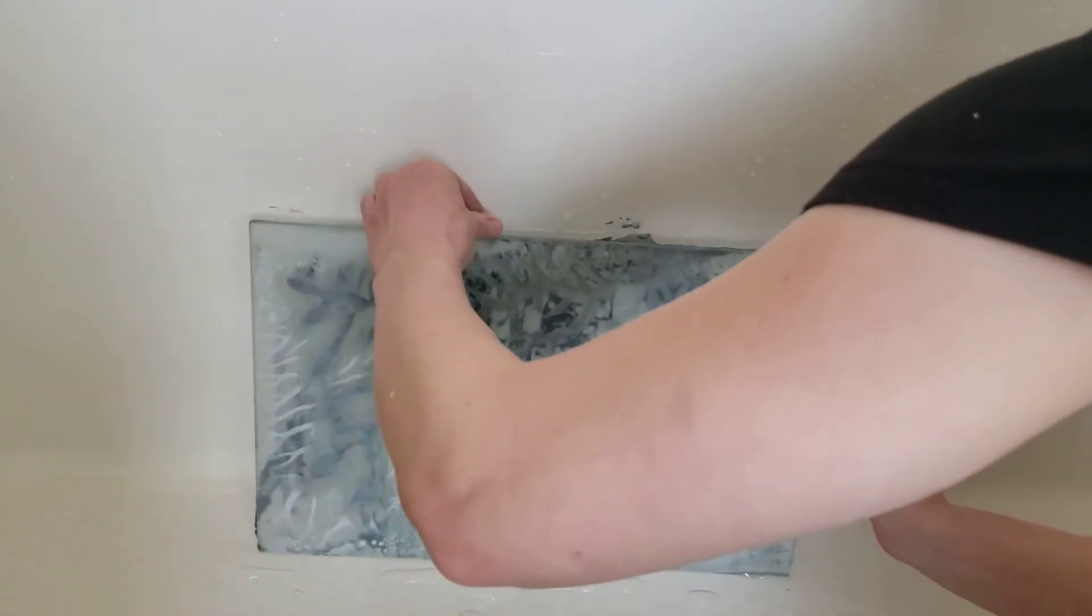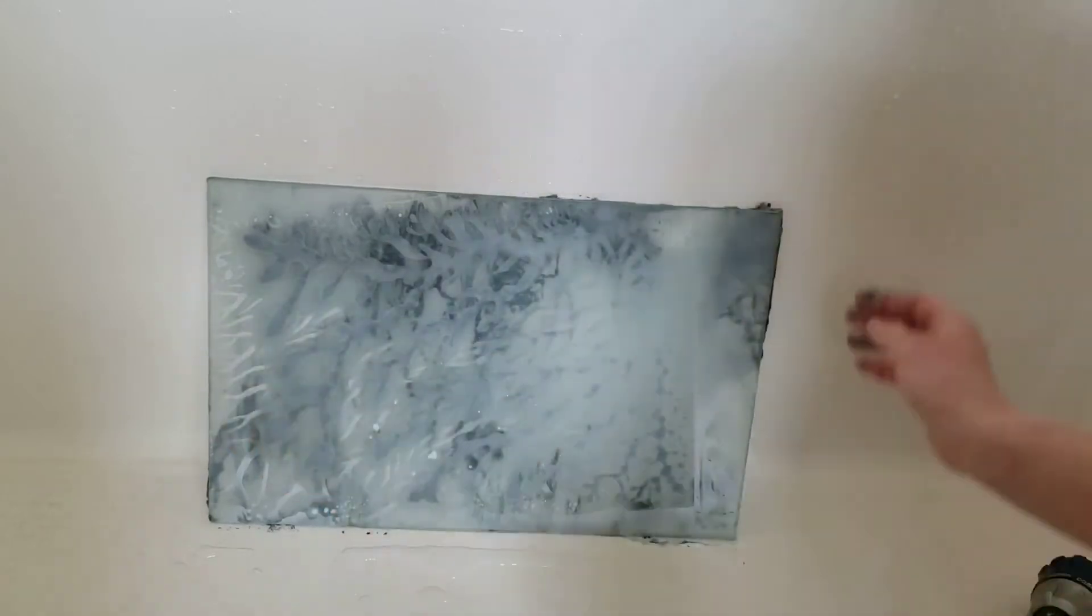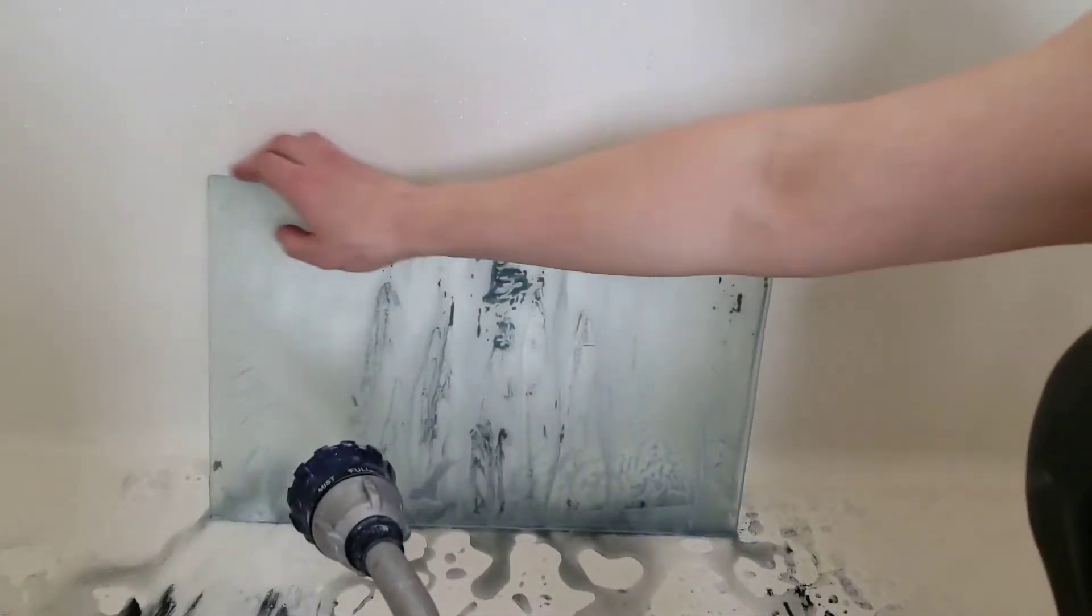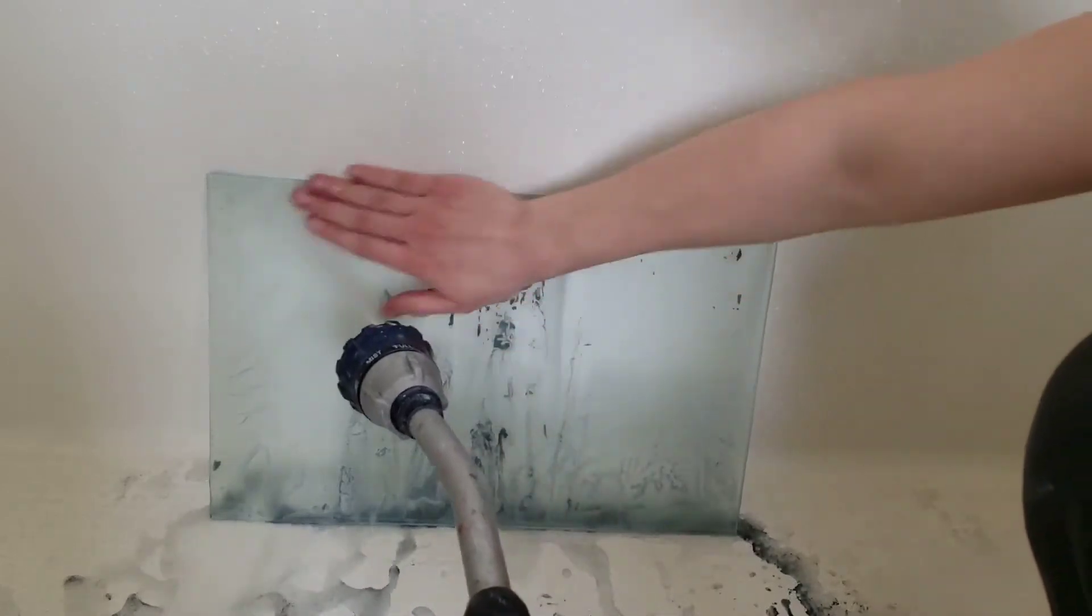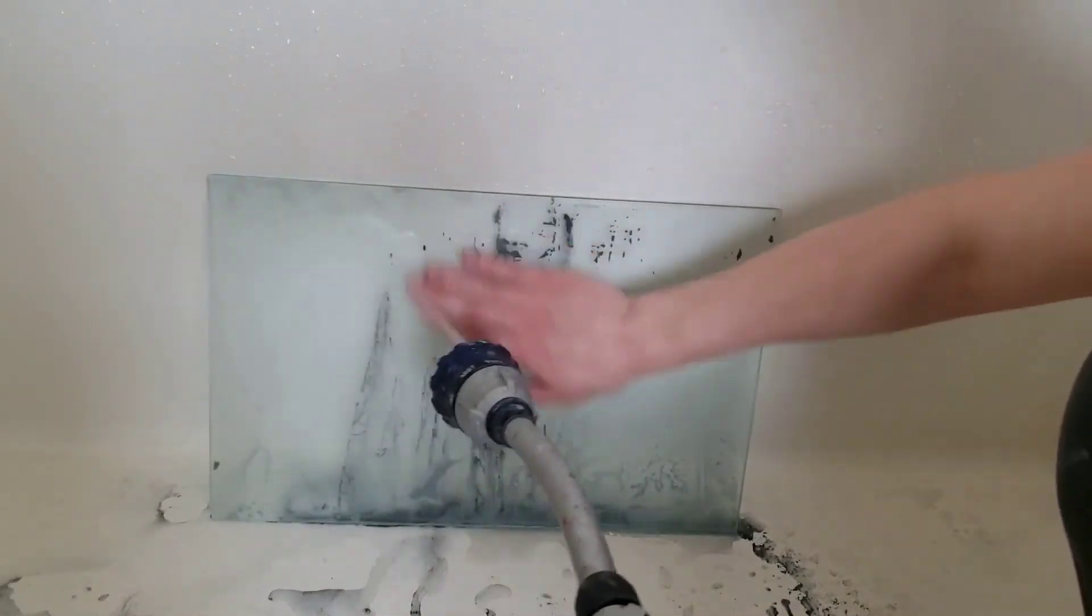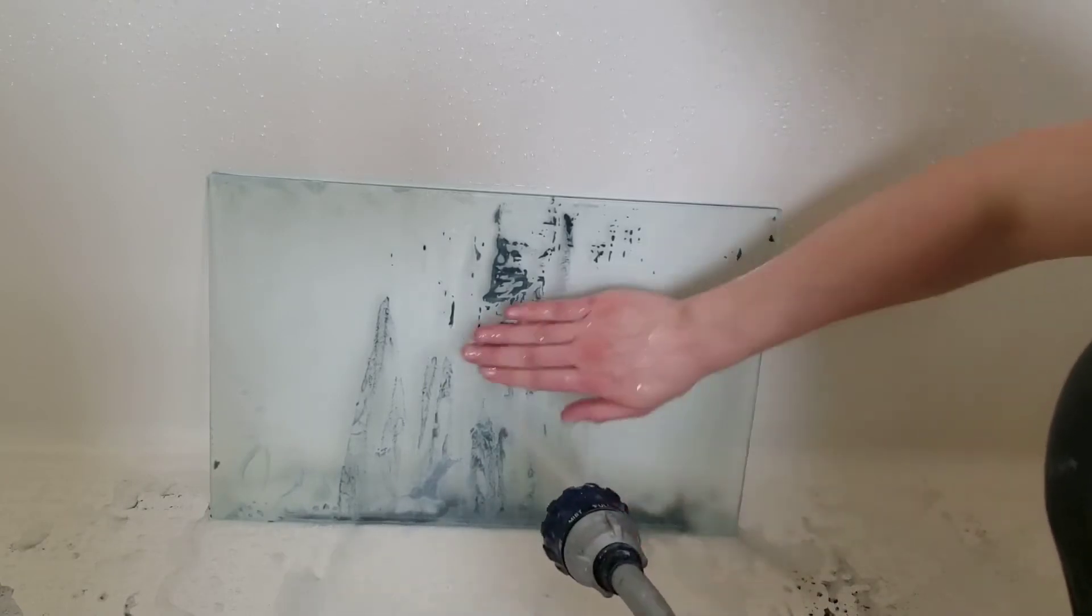Set the plate upright and wash with water. Wipe the edges with your hands because the grit will build up there. Use small circles with your hands to wash the carborundum off the surface of the plate, going first one direction and then the other.